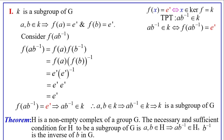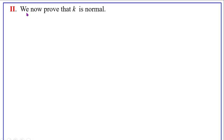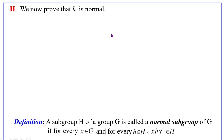Now we show K is normal in G. We recall the definition: a subgroup H of G is a normal subgroup if for every X in G and every H in H, X·H·X⁻¹ belongs to H. Since K is a subgroup of G, to show K is normal we choose one element X from G and one element A from K, and show X·A·X⁻¹ belongs to K.